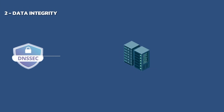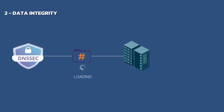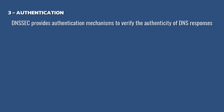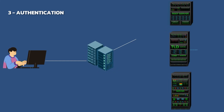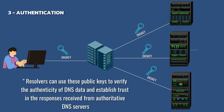DNSSEC ensures data integrity by using cryptographic hashing algorithms to generate digital signatures for DNS records. These signatures are stored alongside DNS records and can be used to verify that data has not been modified in transit; if a DNS response is altered by attackers, the signature validation process will fail and the resolver will reject the response. DNSSEC also provides authentication mechanisms using a hierarchical chain of trust starting from the root DNS zone, where each zone signs its DNS records with a private key and the corresponding public key is distributed through DNS key records, allowing resolvers to verify authenticity.